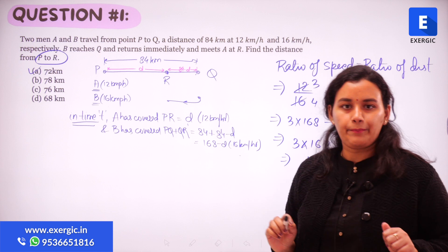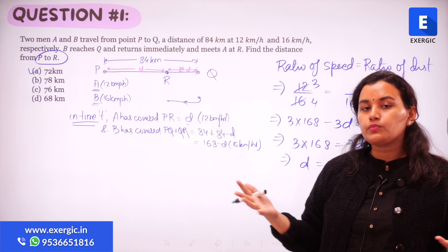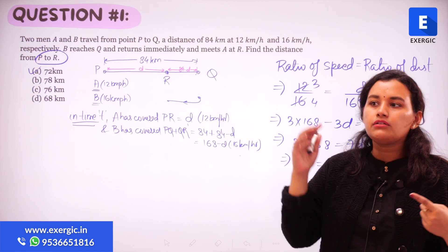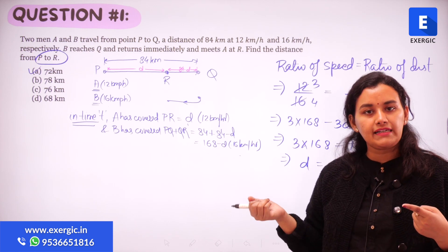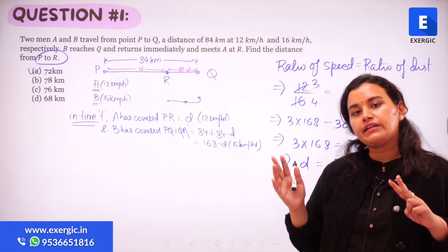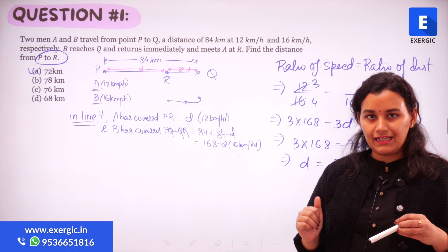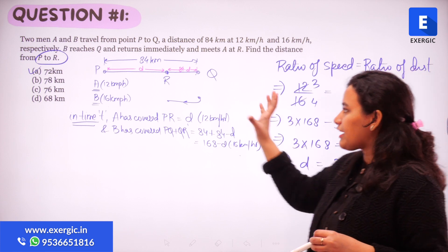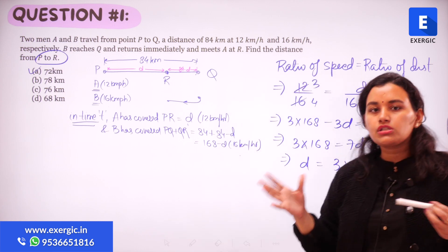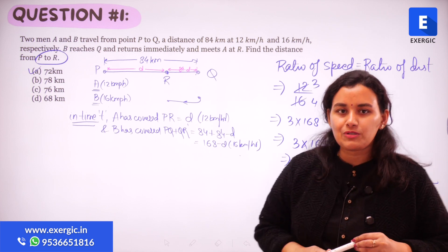To summarize the approach: if distance is constant, use inverse proportionality between speed and time. If time is constant, use direct proportionality between speed and distance. If speed is constant, use direct proportionality between distance and time. Get a pictorial representation, find which variable is constant, use the right proportionality, and you can solve all TSD questions.